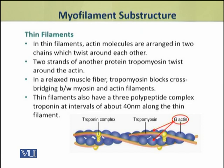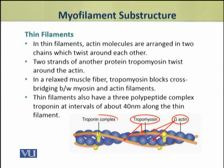Around the actin is another protein called tropomyosin, which consists of two strands that twist along the actin filament. In a relaxed muscle fiber, tropomyosin winds around the actin. These thin filaments also have a complex called troponin, which is made up of three polypeptides.